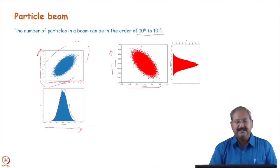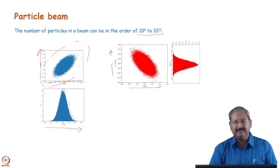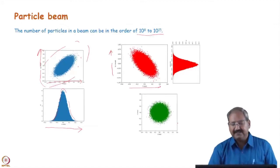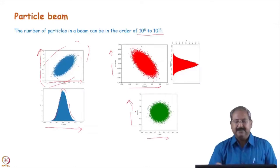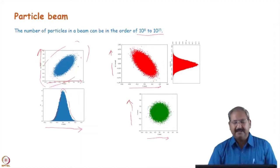Instead of angle, if we look at the extent of the beam from the design axis in the x or y direction, the beam has a finite transverse size. We need to consider the stable motion of all these particles, including those deviated from the central trajectory. So we will now develop the equation of motion for these deviated particles.